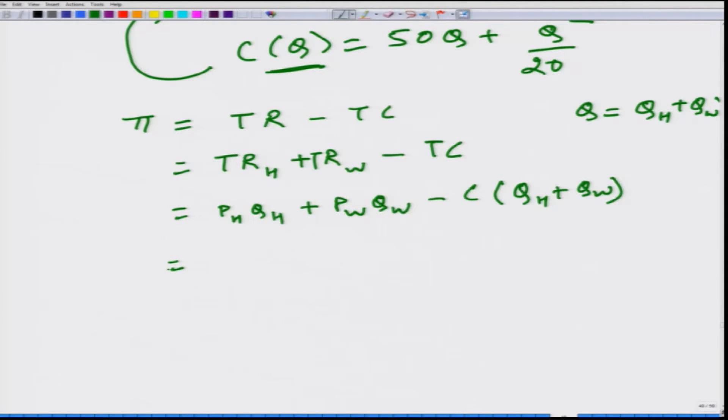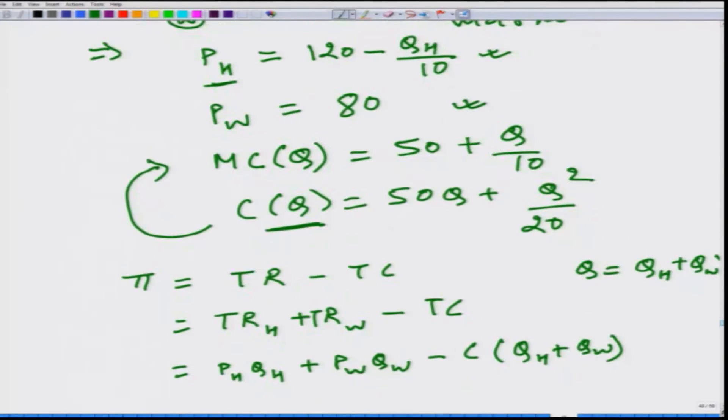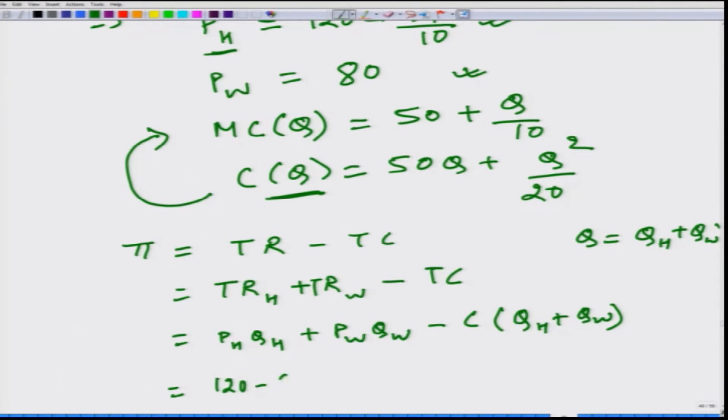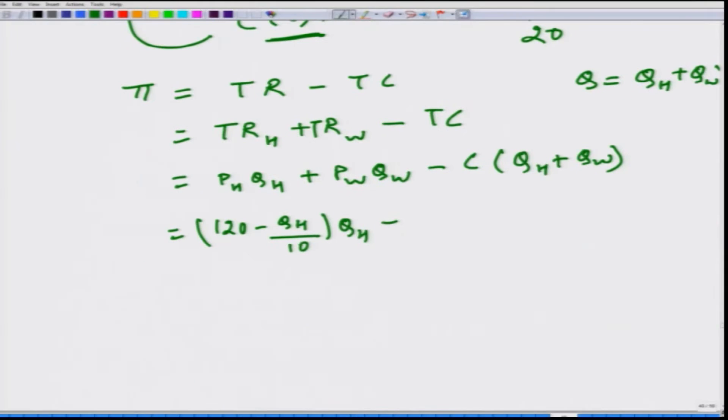Here we are going to have PW multiplied by QW and minus C of Q which happens to be Q is nothing but QH plus QW. Let us proceed, let us write it. What is PH? PH here is function of quantity, so this is 120 minus QH divided by 10 multiplied by QH. PW is fixed because the world market all the firms are able to sell their product at price 80, so 80 QW minus C of QH plus QW.